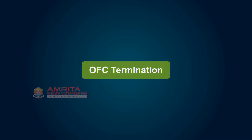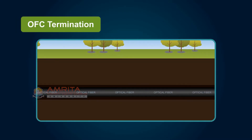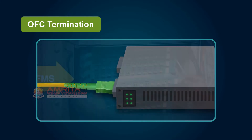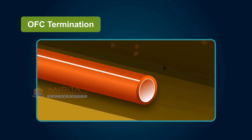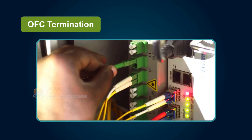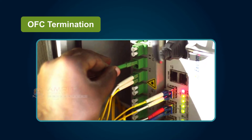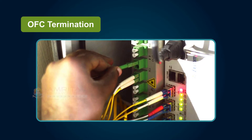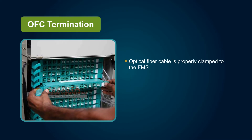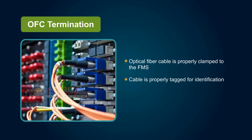OFC Termination. After the full route is laid, the laid cable needs to be terminated to route it to the customer premises. For this, a fibre management system is used. Fibre cable duct containing many fibres comes from far end sites and terminates on FMS using splicing. While installing a fibre management system, ensure that the optical fibre cable is properly clamped to the FMS, the OFC cable is properly tagged for identification, and every fibre is identified when spliced to the pigtails and terminated on the frame.